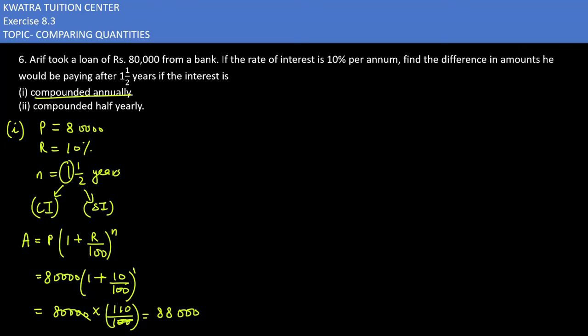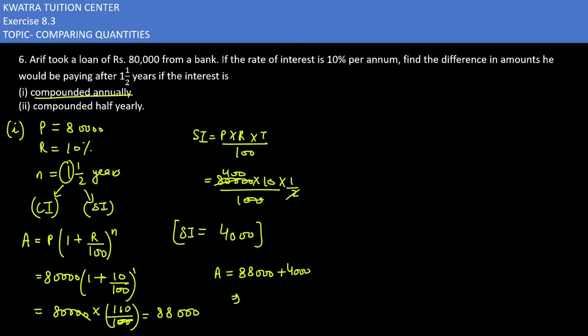Now we have to find the simple interest over half year. The simple interest formula is P into r into t over 100. Principal is 80,000 into rate 10, time period is half, divided by 100. Cancel two zeros with zeros and two with 800, so it is 400 into 10 which is 4,000. So the required amount in this case would be 88,000 plus 4,000, which gives 92,000.